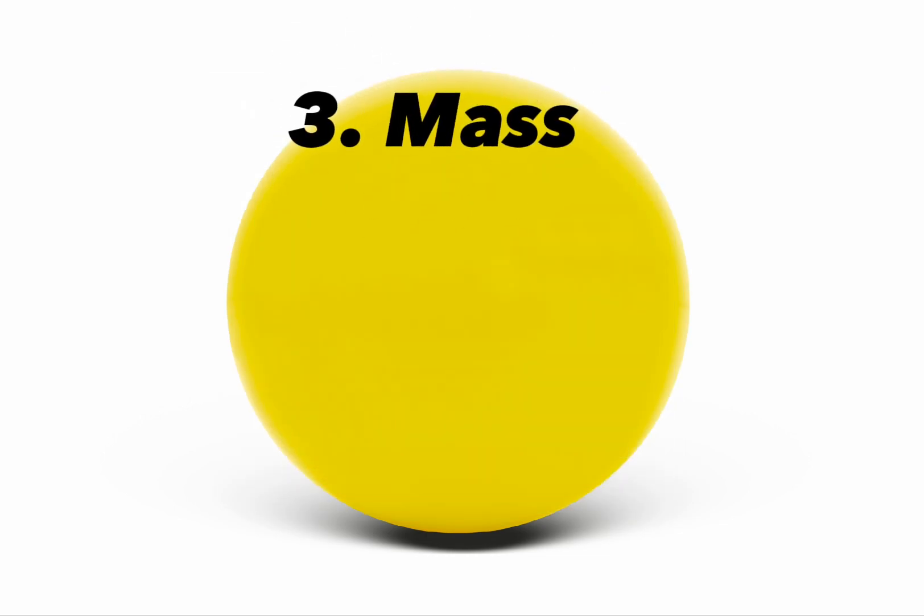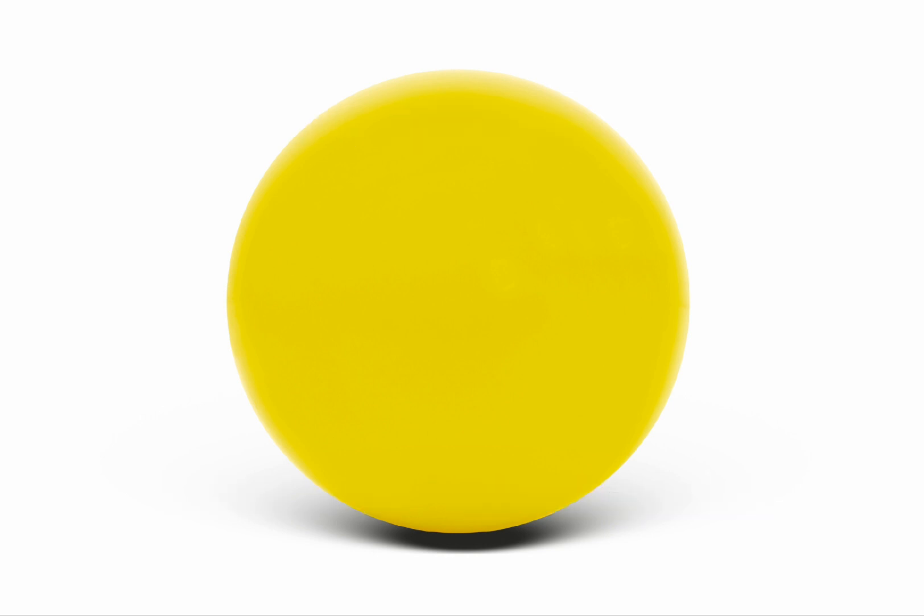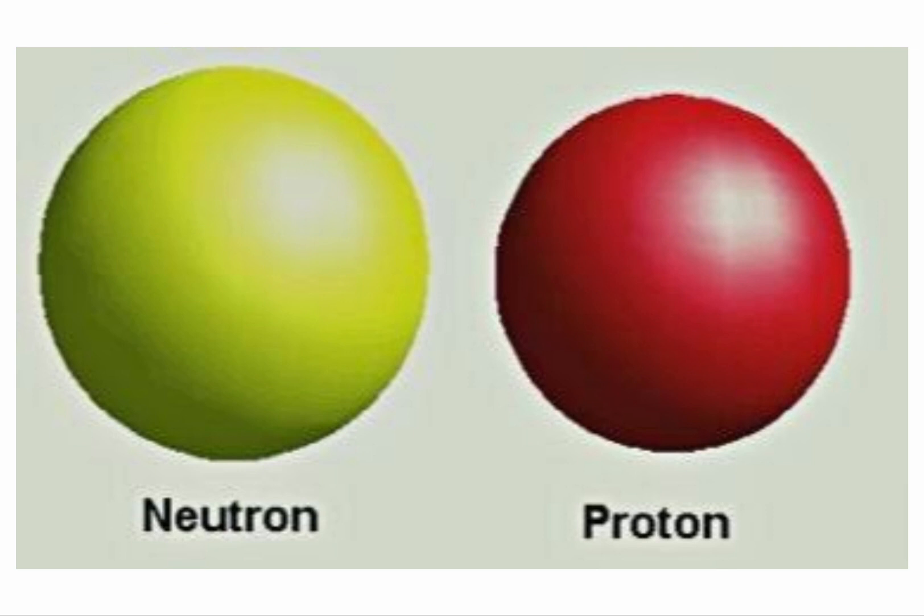3. Mass. Neutrons have a mass of approximately 1.675 x 10 to the power minus 27 kilograms. This mass is just slightly larger than that of protons, the other main constituent of atomic nuclei.